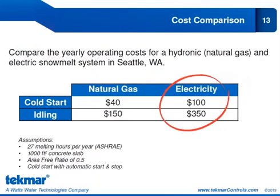For a second comparison, in Seattle, Washington, ASHRAE shows only 27 melting hours per year. Even though natural gas is still cheaper — $40 versus $100 for electricity on a cold start — because the overall cost to operate with electricity is so low, you're probably not going to see the return on investment needed to justify a hydronic system. In a low-melting-hours climate like Seattle, an electric snow melt system would likely be the better choice.